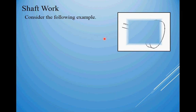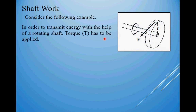The second one: shaft work. Consider this as an example. We have a shaft which is rotating and you have effort F — that is force applied through a distance R. In order to transmit energy with the help of a rotating shaft, torque has been applied. Now what is torque? Torque is given by force into radius. This is the force and there is a radius, that is a distance from the center of the shaft to the point of application. This distance multiplied by the force applied will be equal to torque.